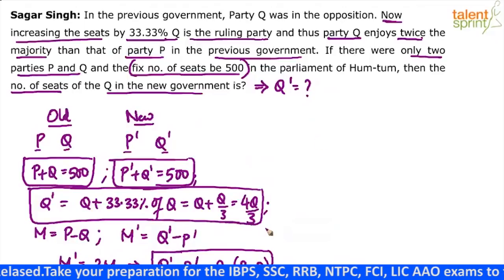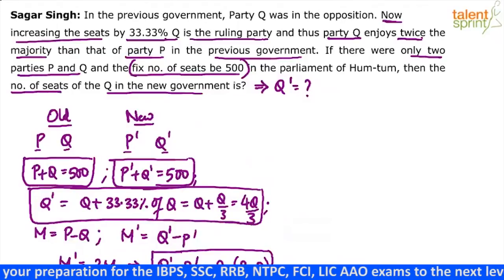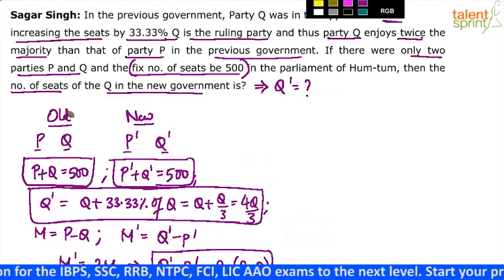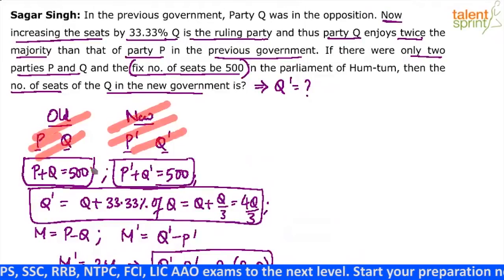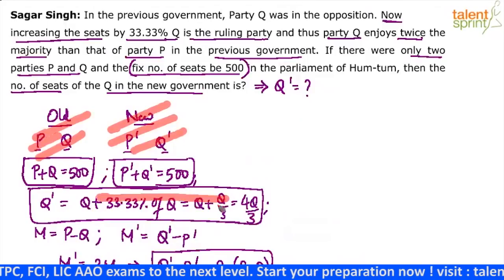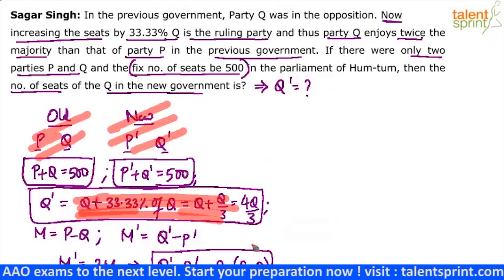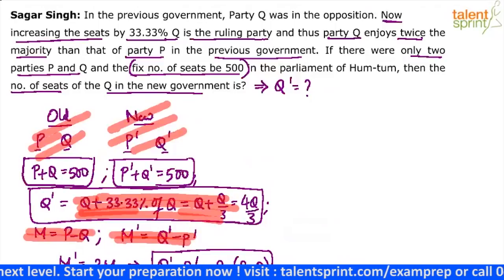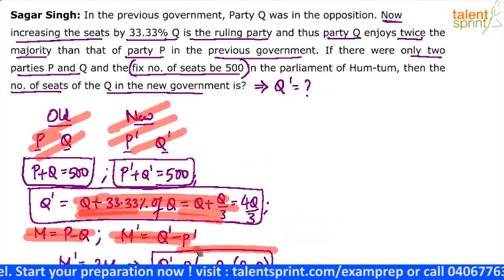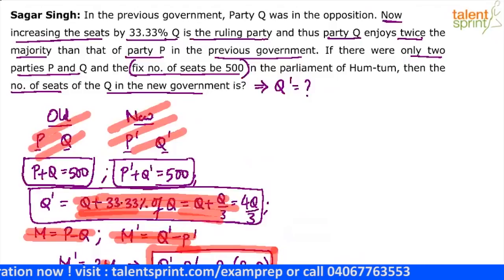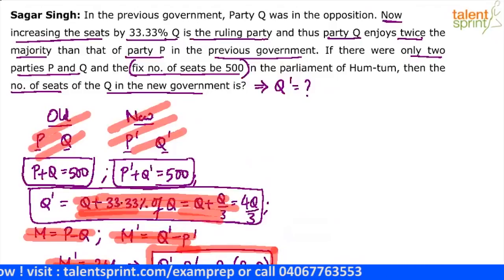It has taken time to frame the equations. When you solve it yourself, you will not be doing all this. Don't write all unnecessary steps and waste time. You know directly P plus Q is fixed, P dash plus Q dash is fixed. You can directly write Q dash equals 4Q by 3. And you don't have to write 'majority P minus Q' and 'majority Q minus P dash' — you should be capable enough to directly frame the equation Q dash minus P dash equals 2 times of P minus Q. Don't waste time writing unnecessary steps.